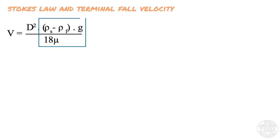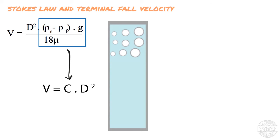To make things less complex, we can simplify this relationship by considering c as a constant equal to the right-hand side of this relation. So then we have that the velocity is equal to this constant times the diameter of the grain squared.